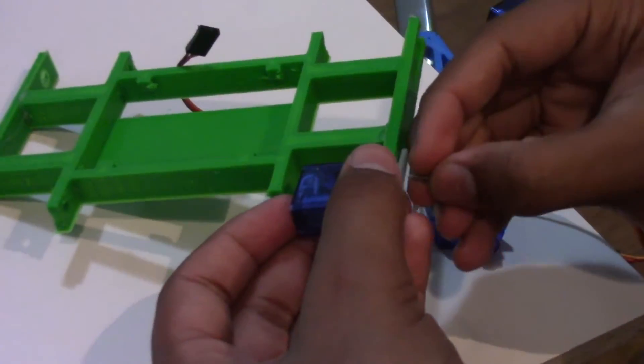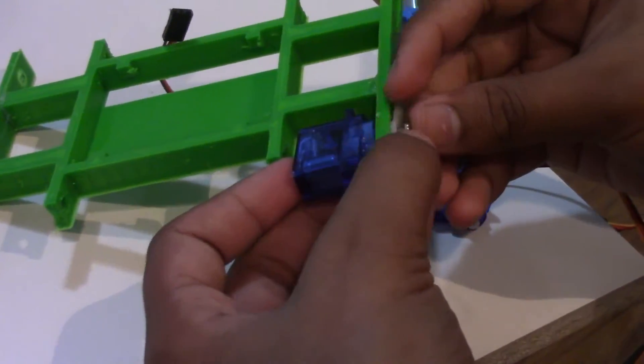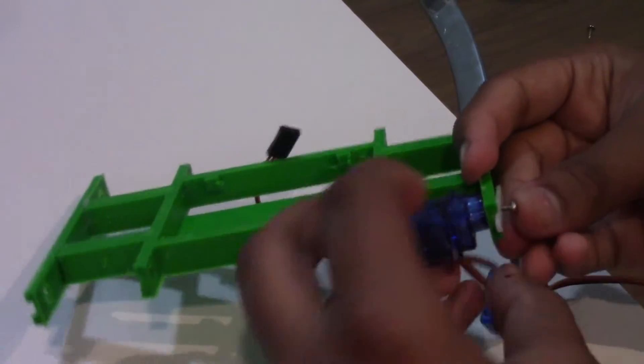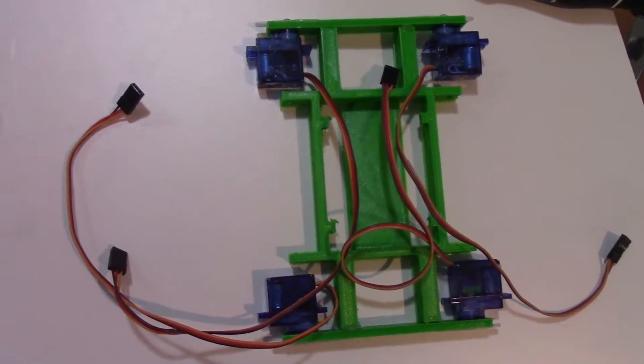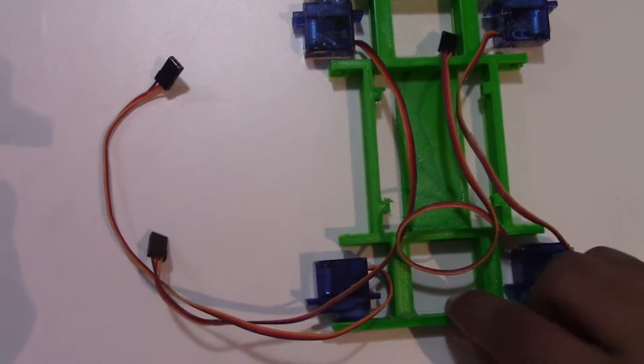When you're done pushing it in, you make sure it's staying there properly, and then you get your screw and you put the screw into the white servo shaft and you screw it in. So this is what the servo should look like after you're done connecting them, two on this side and two on this side.